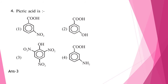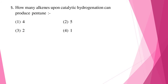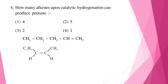Question five: how many alkenes upon catalytic hydrogenation can produce pentane? There are two such alkenes, and when hydrogenation is done on these alkenes, pentane is produced. The correct answer is option three, that is two alkenes.